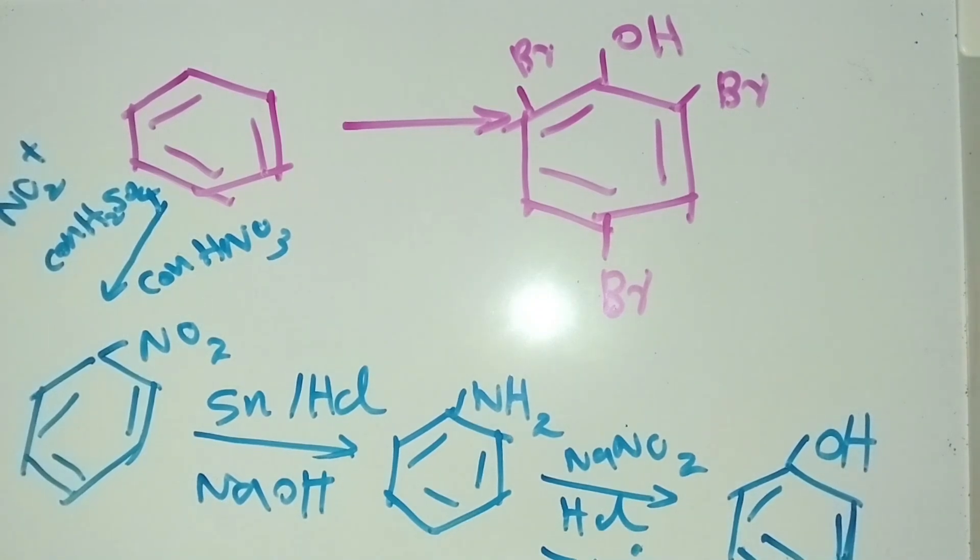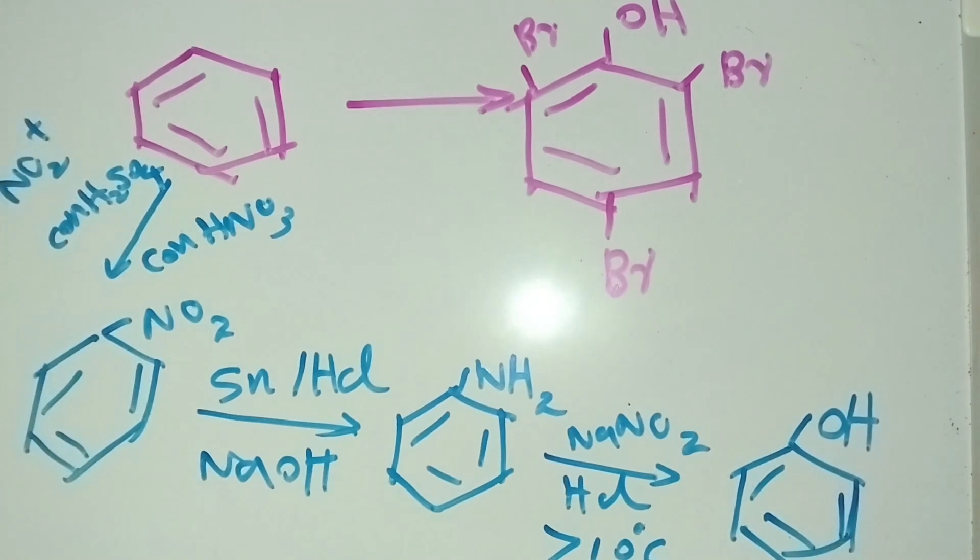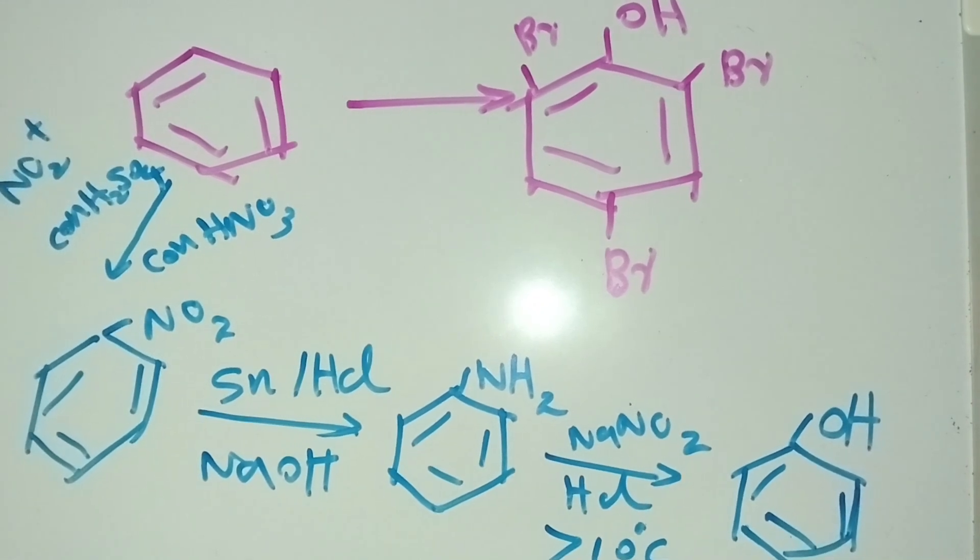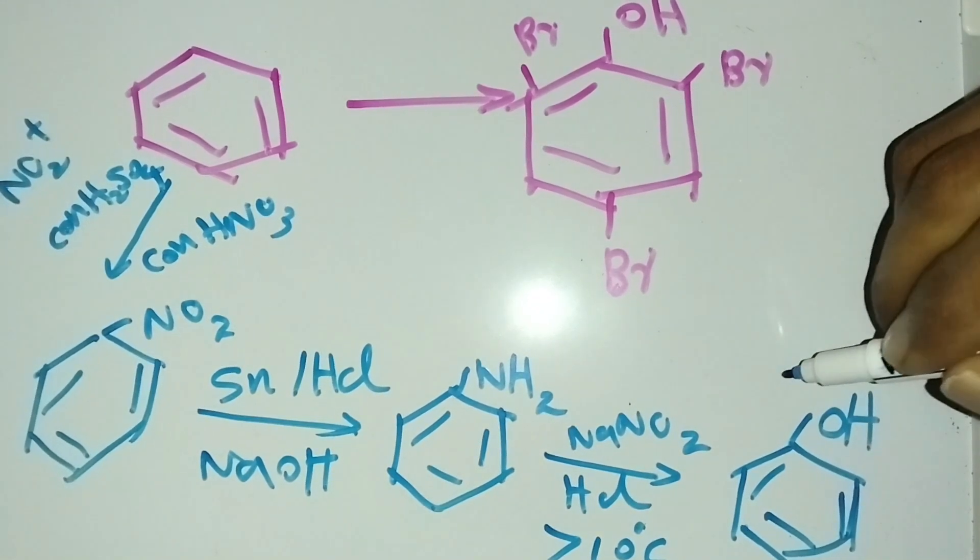Now we have phenol, and then we can convert phenol into 2,4,6-tribromophenol. For my last step, I can use Br2 liquid.